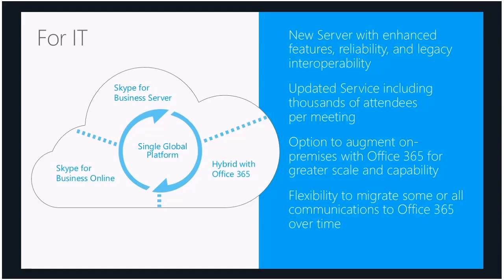Microsoft are also advancing their online service as part of Office 365, including the ability to host much larger meetings. Today the attendee limit on Office 365 meetings is around 250, but they have increased that to several thousands of attendees. Both online and server customers have the option to use larger online meetings — for server customers this is an example of using the cloud to enhance the server deployment. Other hybrid options include connecting Skype for Business Server to Exchange Online and splitting users between Skype for Business Server and Skype for Business Online — truly a flexible migration path utilizing existing on-premise investment.